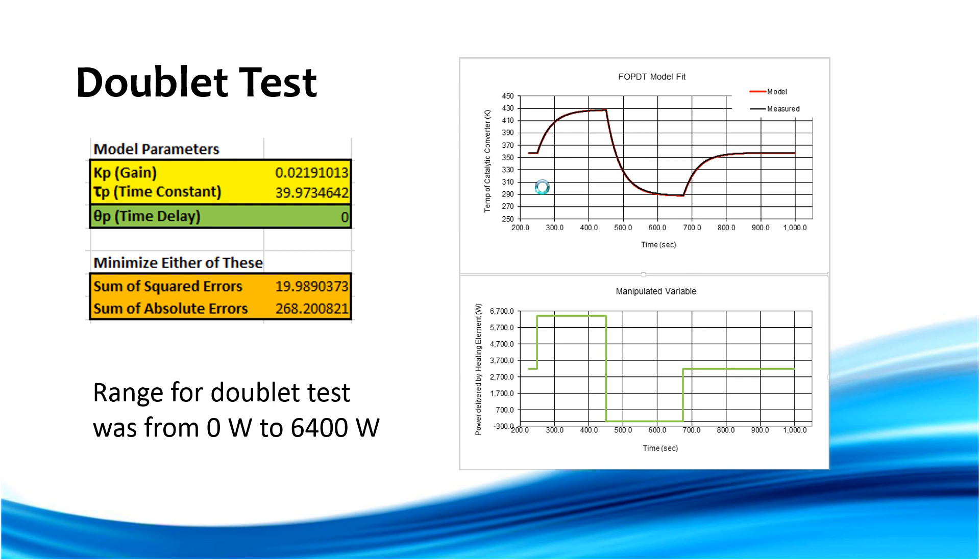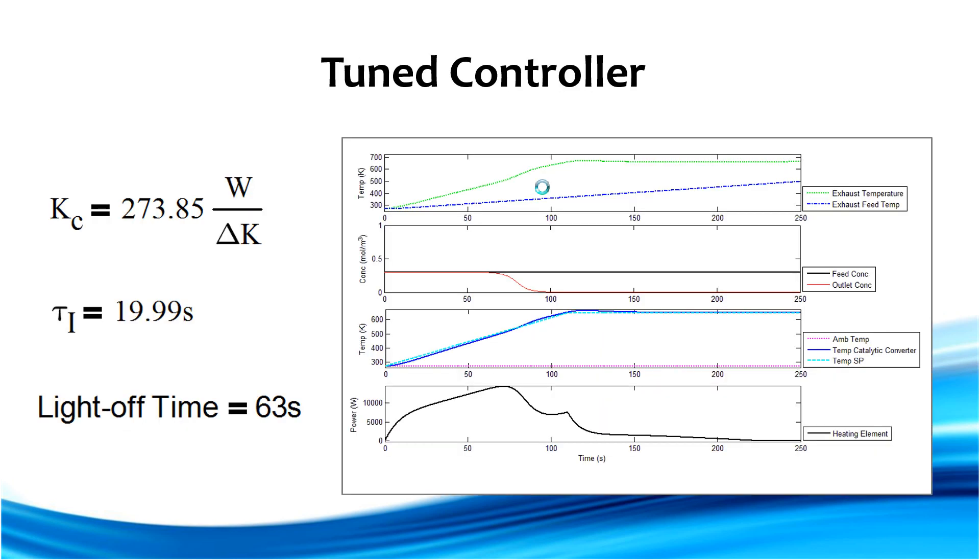So we took that data and we fit it to our first order plus dead time model. And our initial guess parameters are seen here on the top left of our gain and our time constant. And then we further tuned those constants to better get to where we want our goal in one minute.